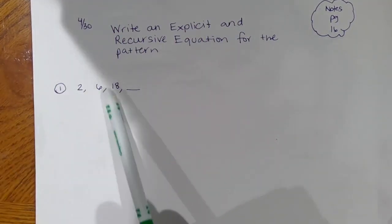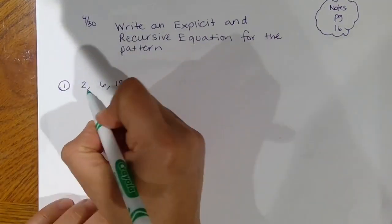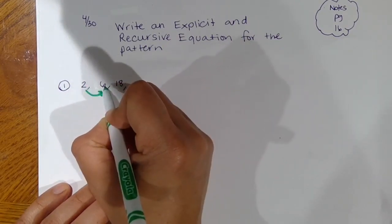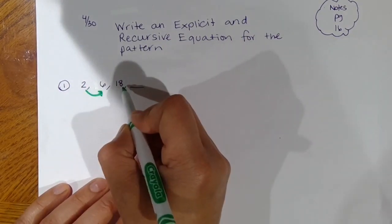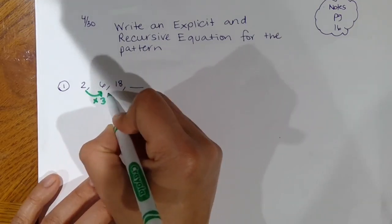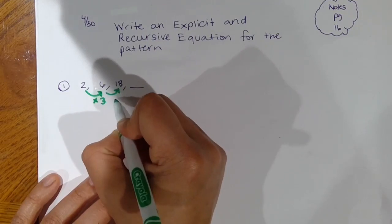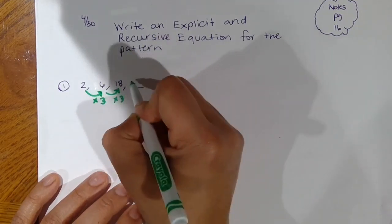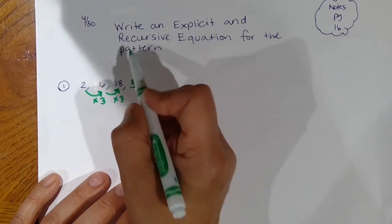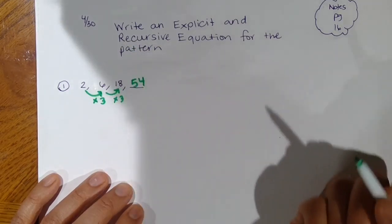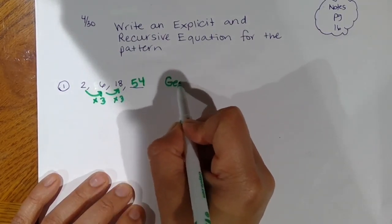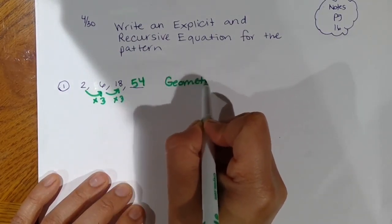It's growing by multiplying by 3 each time. So 2 plus 4 gives you 6, but 6 plus 4 won't give you 18. So you're not adding — you're actually multiplying by 3. When you're multiplying by 3 every time, you know this is a geometric equation, not an arithmetic one.